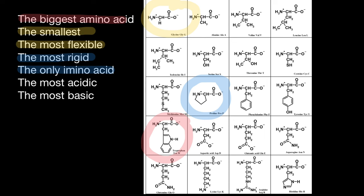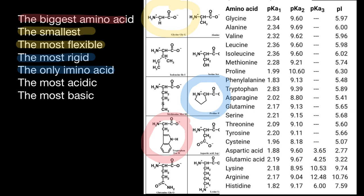Take a look at this table, which shows which amino acids are most acidic and which are most basic. The first column is the name of the amino acid. pKa1 stands for the carboxylic group, pKa2 stands for the amino group, and pKa3 stands for the R group. As you see, most amino acids don't have any charge in the R group, but five amino acids have a charge at physiological pH. Aspartic acid and glutamic acid have a negative charge, while lysine, arginine, and histidine have a positive charge.